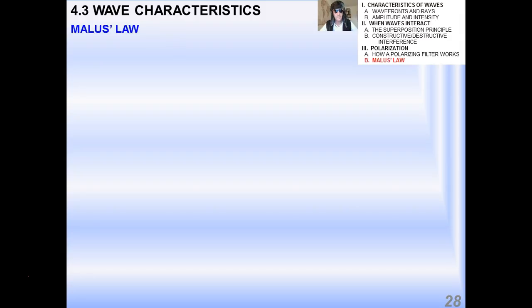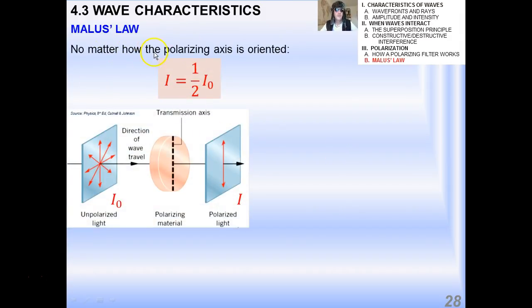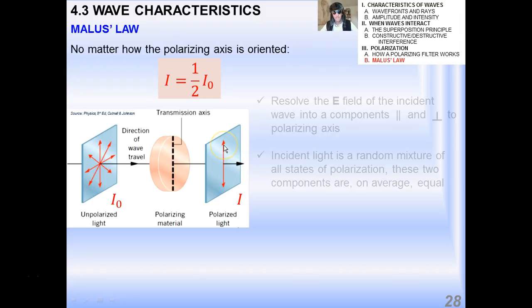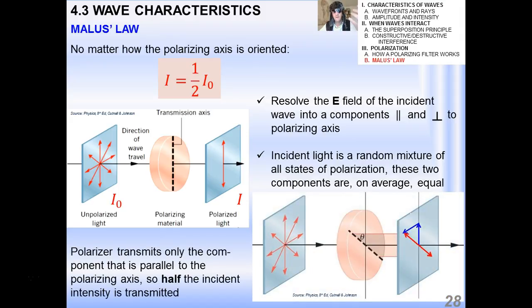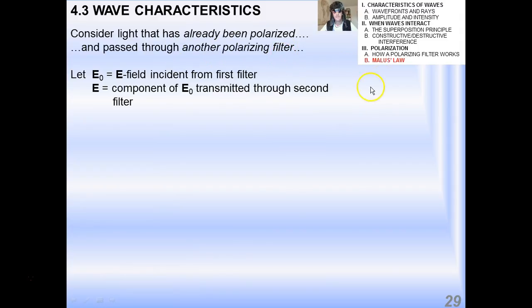Last thing I want to talk about in this topic 4.3 is called Malus's Law. It turns out that no matter how the polarizing axis is oriented, the intensity of light on the other side of a polarizing filter compared to what it was on the original side is reduced by a factor of one-half. This is surprising. You would think it would be much less than one-half. That's what it is. And it turns out, we can do a little more maybe in class on this. If you resolve the electric field of the incident wave into components parallel and perpendicular to the polarizing axis, the incident light is a random mixture of all states of polarization, and on average, those two components are equal. The polarizer transmits only the component that's parallel to the polarizing axis. So it turns out, and you could actually do calculus to figure this out, though we don't really have to, only half of the incident light is transmitted. This is very important in solving physics problems. Very important relationship. And that's called Malus's Law. Well, it's leading up to Malus's Law.